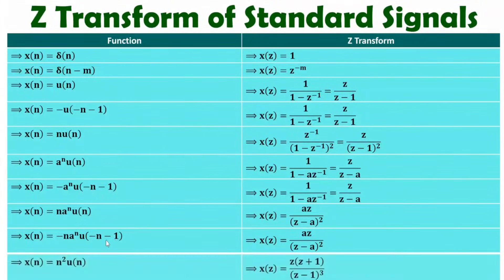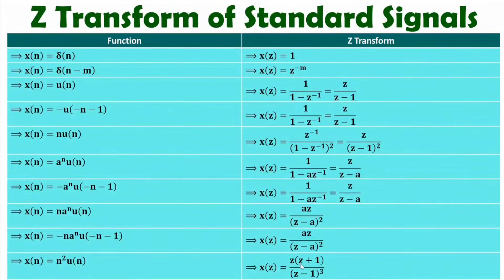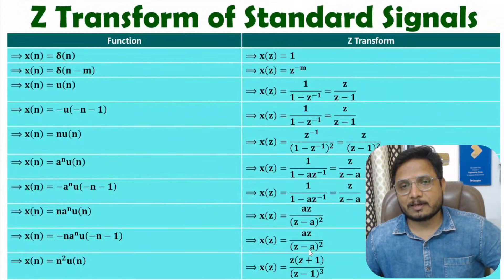Now let me discuss one more equation, that is N²·U(n). If you observe, with N·U(n) we have Z divided by (Z minus 1) squared. For N²·U(n), the denominator becomes a cube, and in the numerator you multiply by (Z plus 1). So in sequence, you can remember these equations — that is quite useful in competitive examinations.